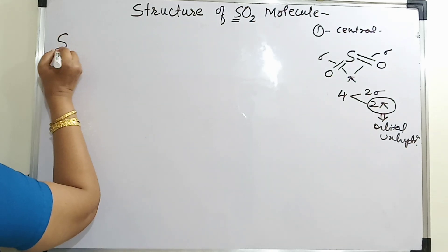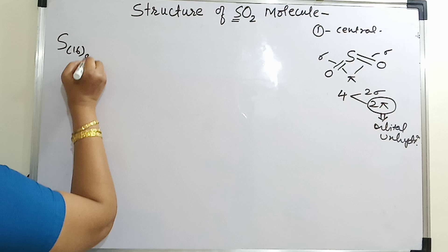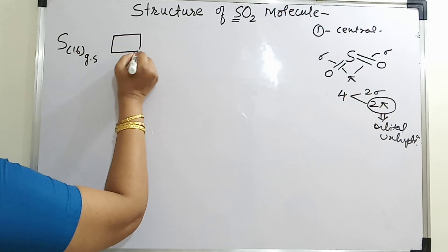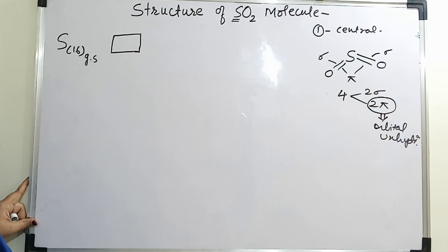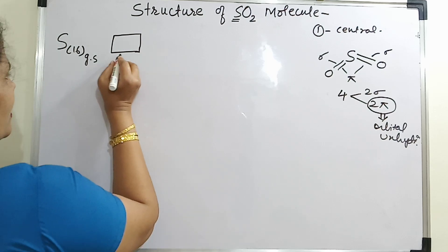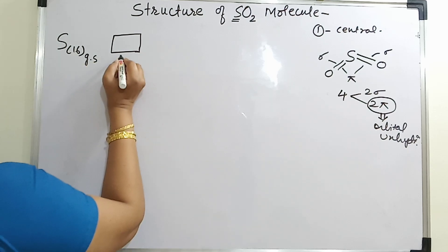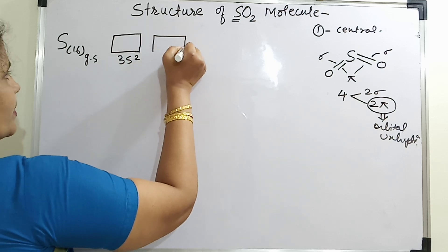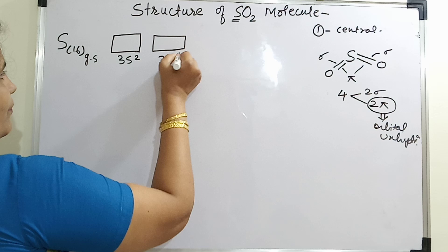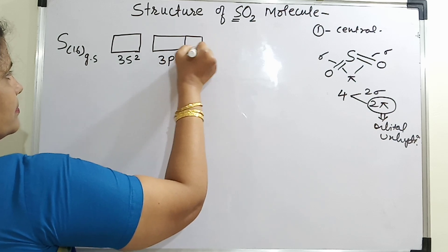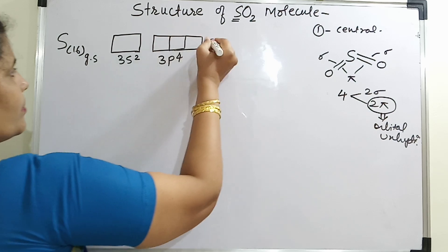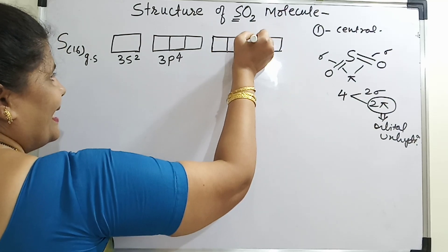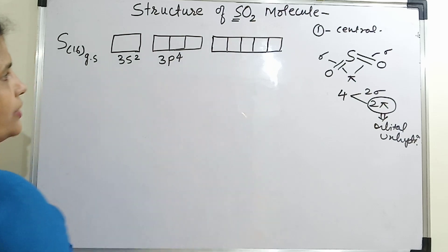Sulfur's atomic number is 16. Let us write its electronic configuration in ground state. The atomic number is 16, so its electronic configuration is 3s2, 3p4, and I will keep the 3d orbital vacant here because in case excitation is required, I can use this.